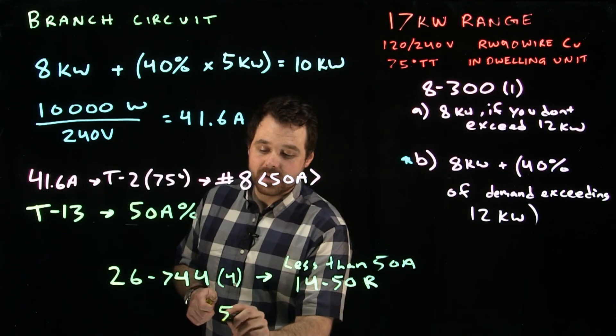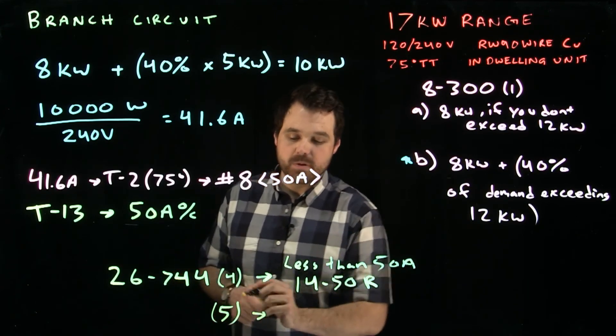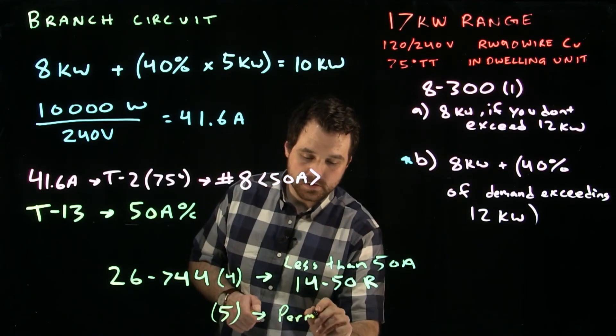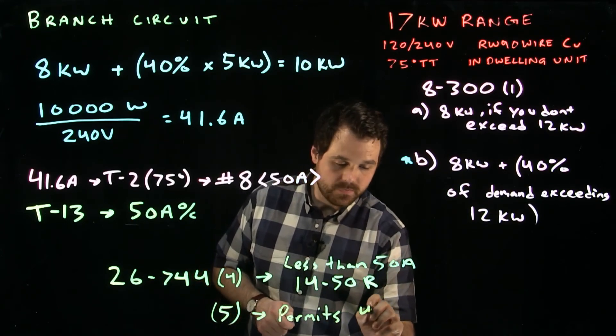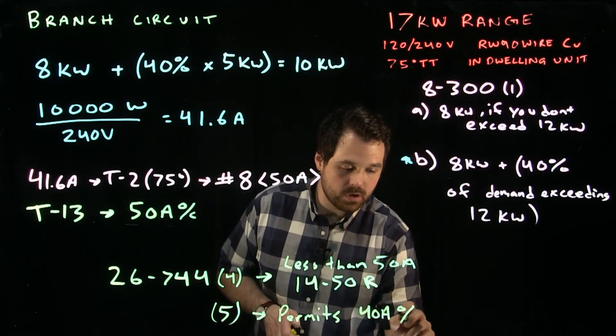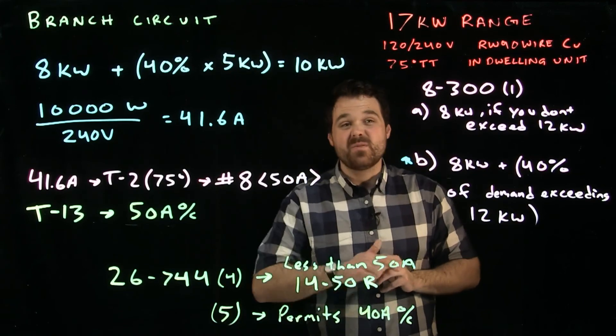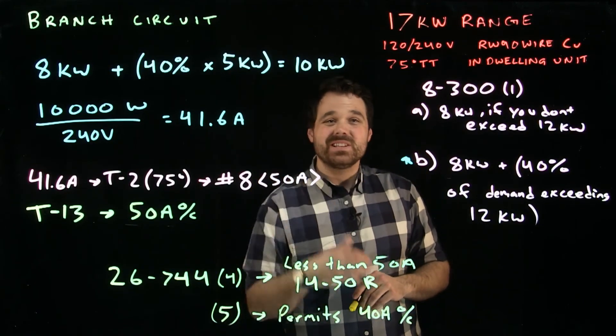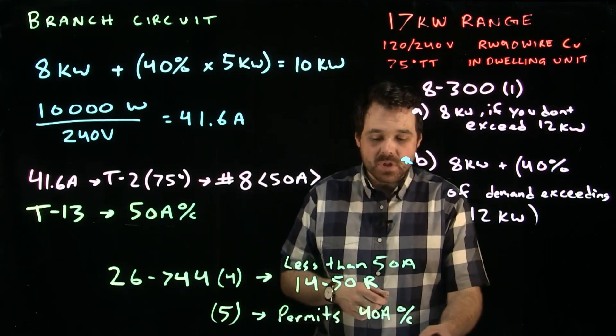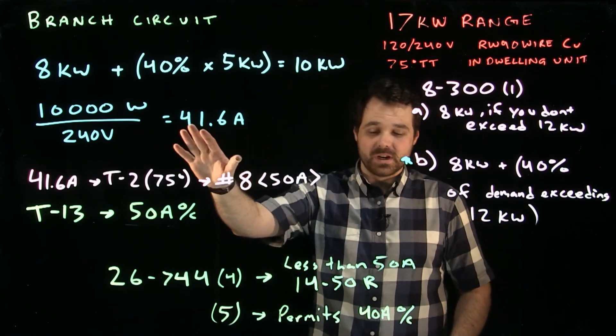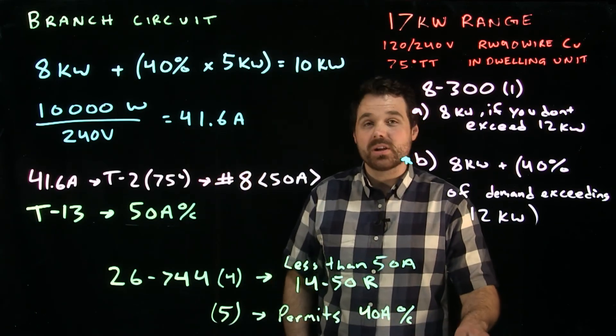Sub-rule 5 does permit you a 40 amp overcurrent device. It does allow you to put a 40 amp overcurrent device, but you would still need that 50 amp wire. In this case, we wouldn't go with the 40 amp overcurrent device because that's not big enough. We would go with a 50 amp in our case here.